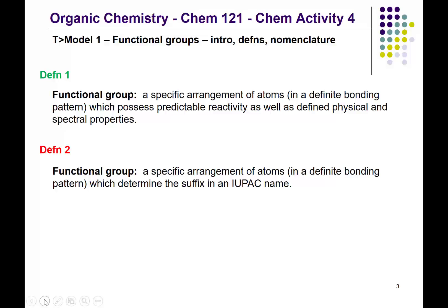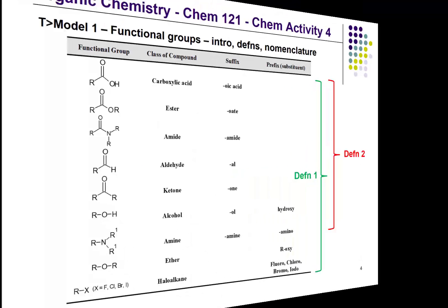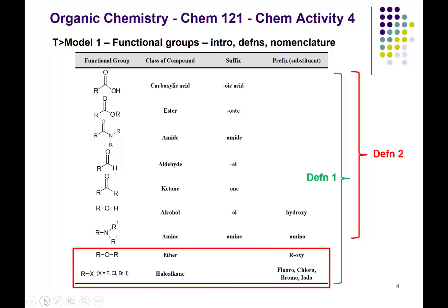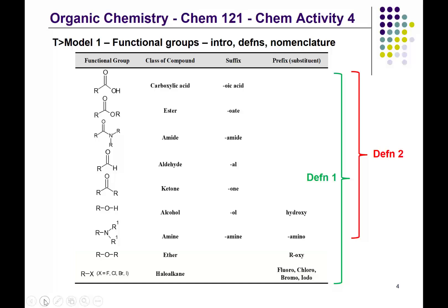There is overlap between these two definitions. Looking at the chart on the first page of this activity, you see a list of various functional groups. These are all functional groups according to definition one — an arrangement of atoms with a defined bonding pattern that can predict physical properties and reactivity. However, the last two groups — the ether and the halogen — are not functional groups according to definition two; they do not have suffixes in the IUPAC name. You indicate they're present using a prefix.